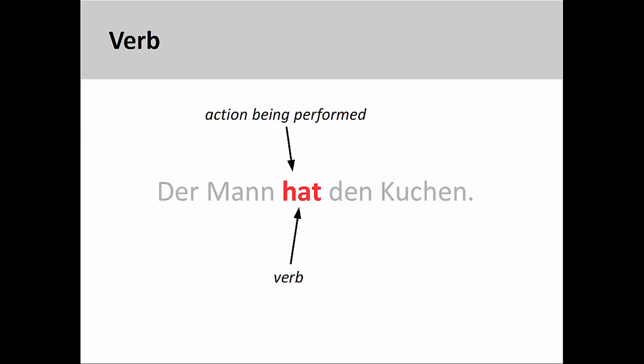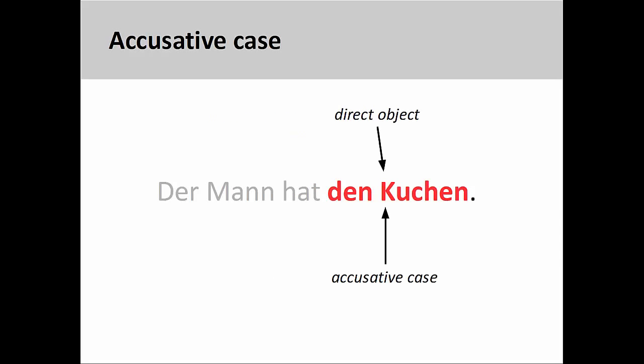This, however, raises a question: what does he have? What person or thing receives the action of being possessed? And that is what the accusative case tells us here. The direct object expressed by the accusative case shows us who the recipient of the action is. Here the recipient is 'den Kuchen,' the cake.